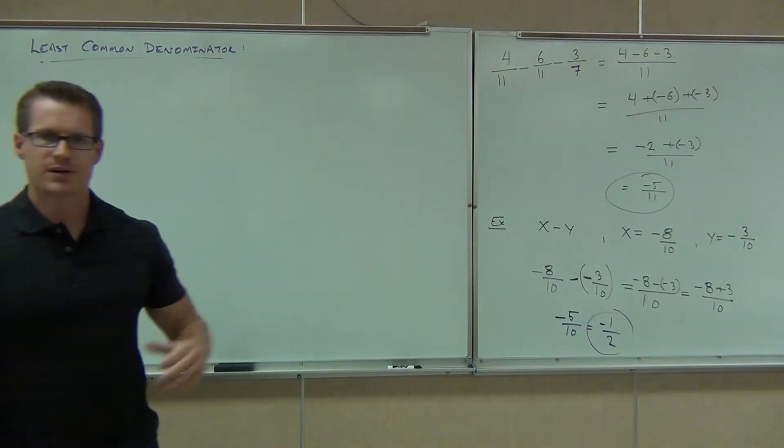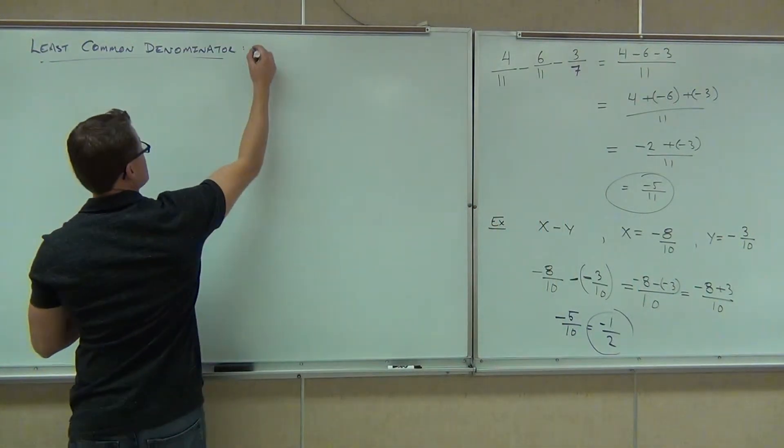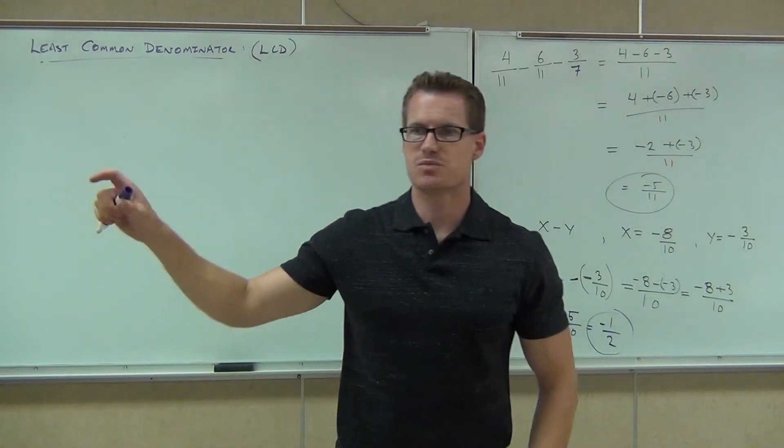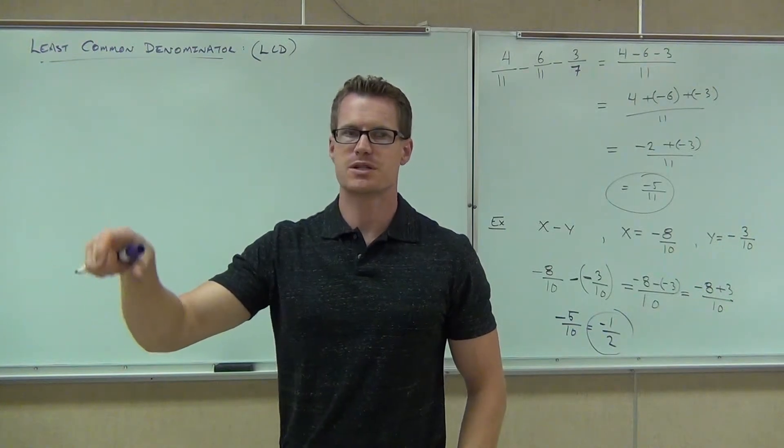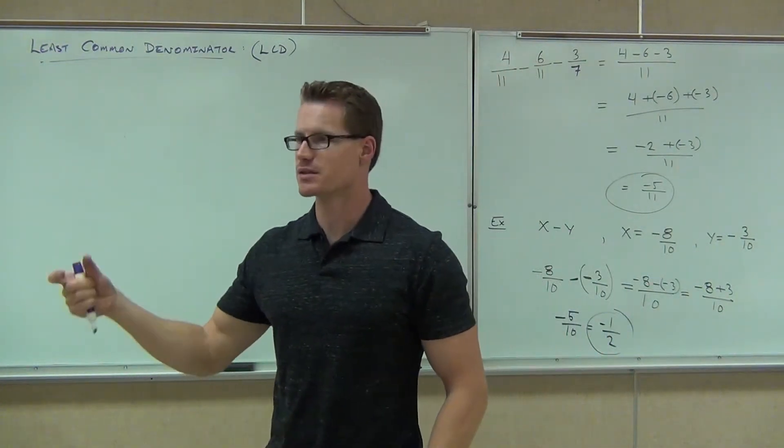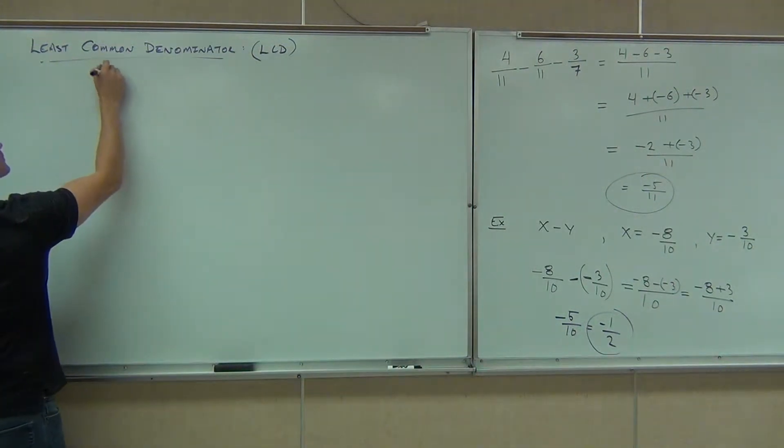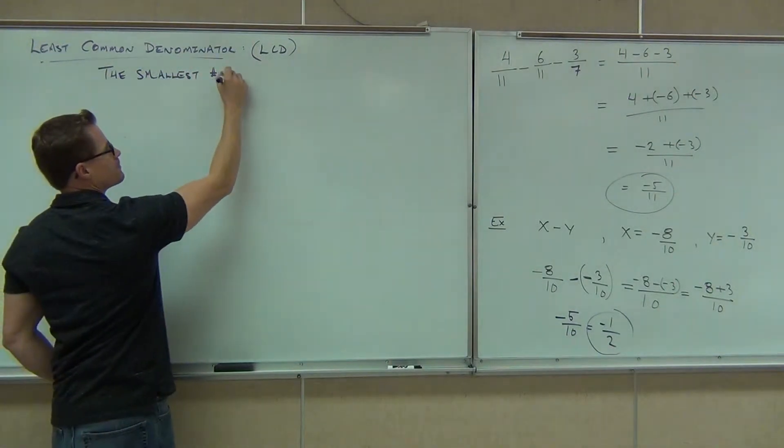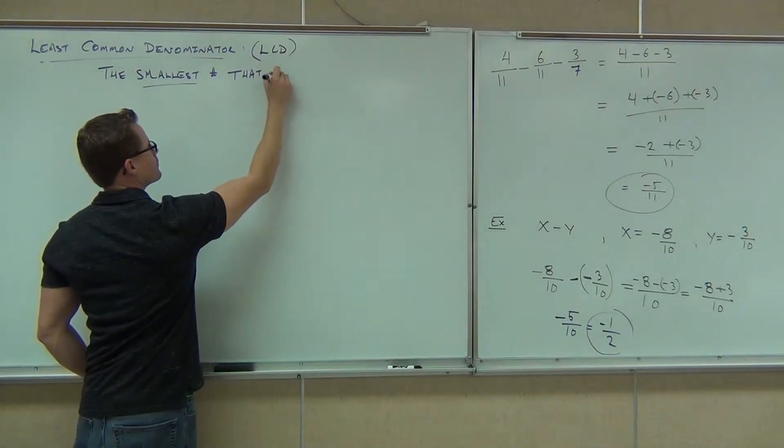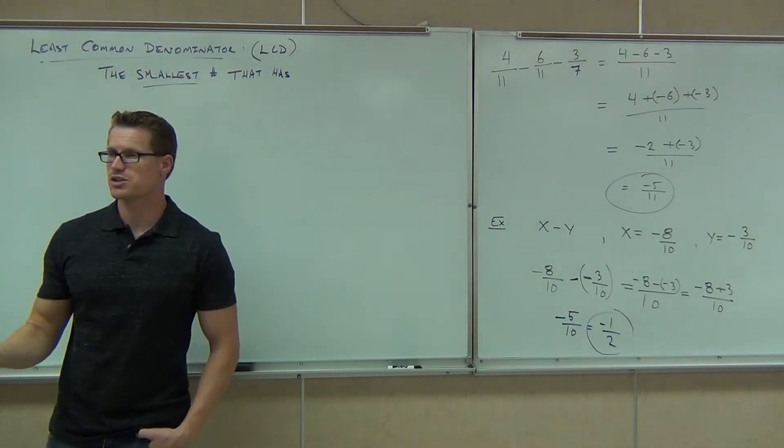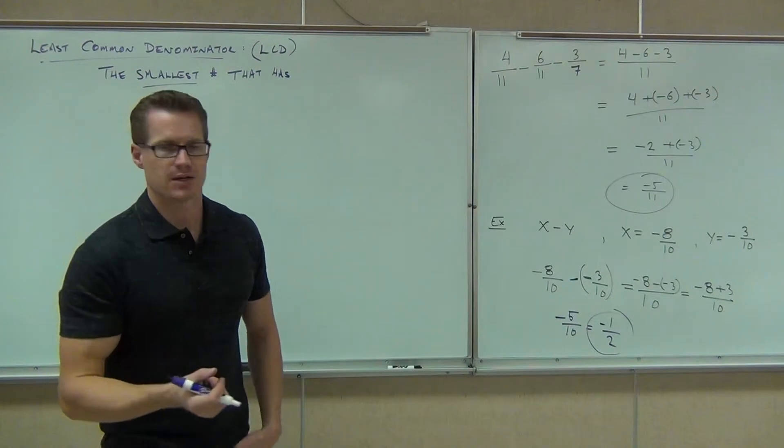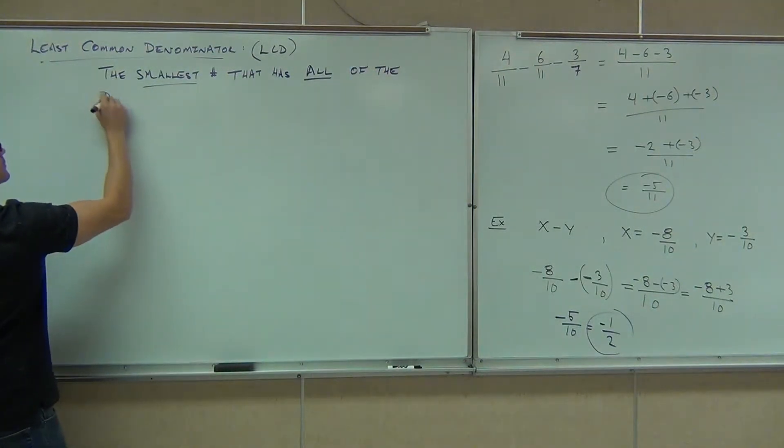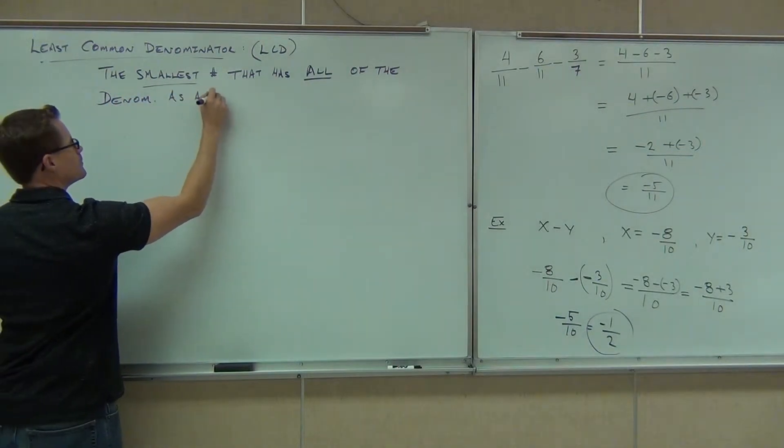So least common denominator, denominator is the bottom of a fraction, common means shared, least means smallest, and we abbreviate this usually with LCD. We'll be using that a lot in this class, LCD. What this is, least means smallest, the smallest number that has all of the denominators as a factor. What that means is that all denominators divide this number and it's the smallest one that happens.